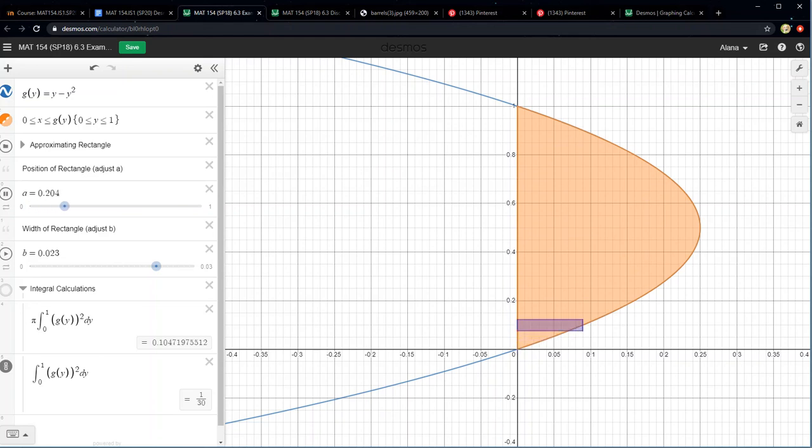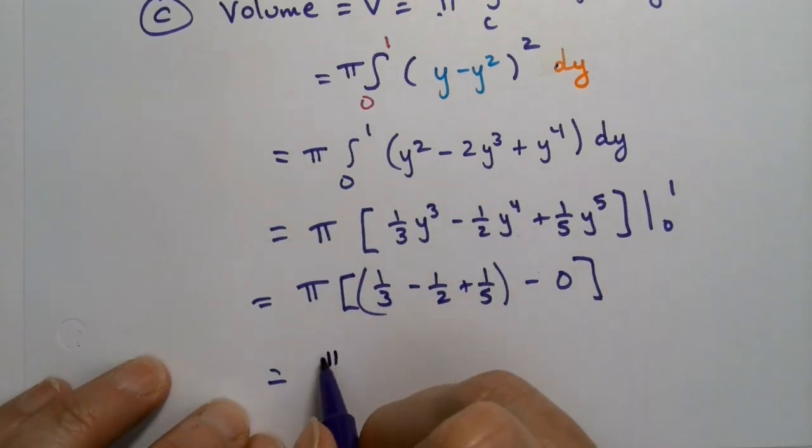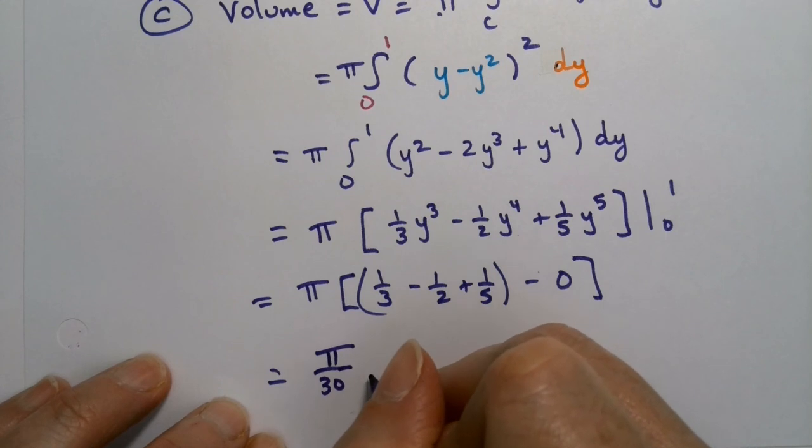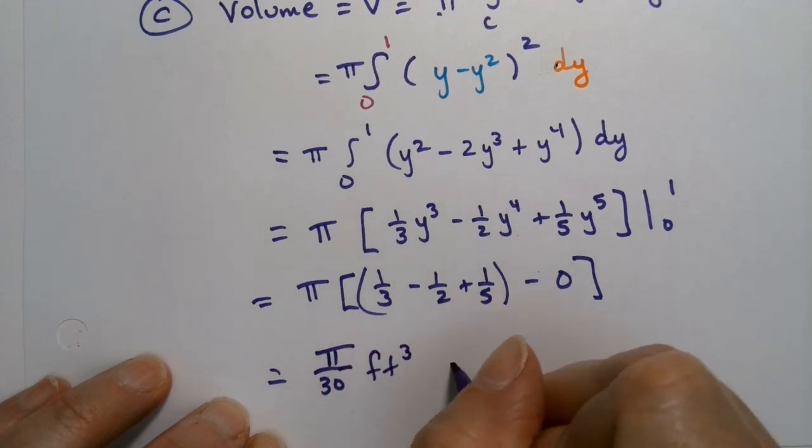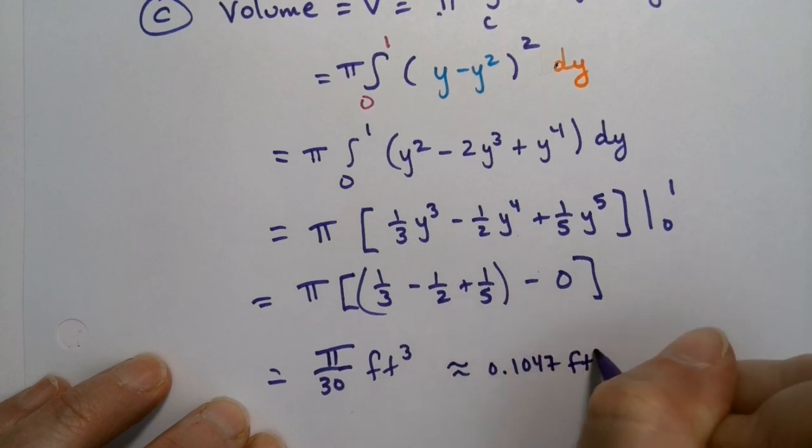The volume of that object would be π/30. The units here are feet, so this would be feet cubed, which is about 0.1047 feet cubed.